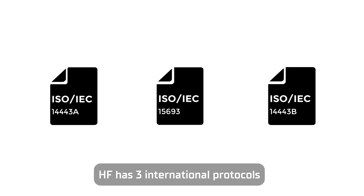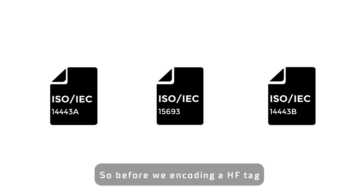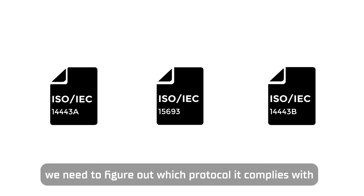HF has three international protocols. The tag can only work with the same protocol as the reader, so before we encode an HF tag, we need to figure out which protocol it complies with.